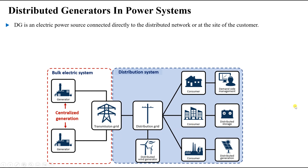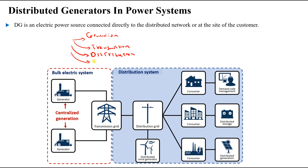As you already know, any electrical power system consists of three or four main stages: generation, transmission of electrical power, distribution, and utilization of the generated power.